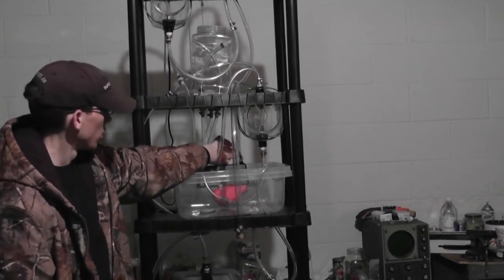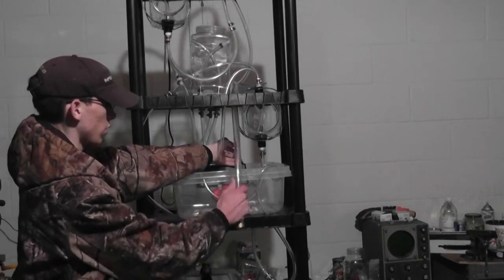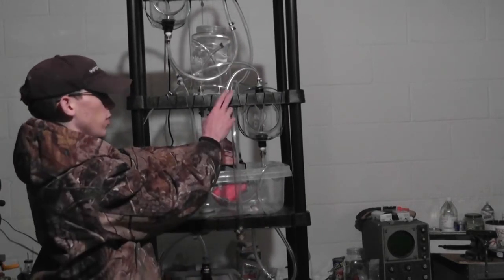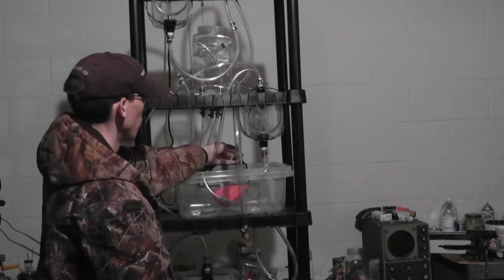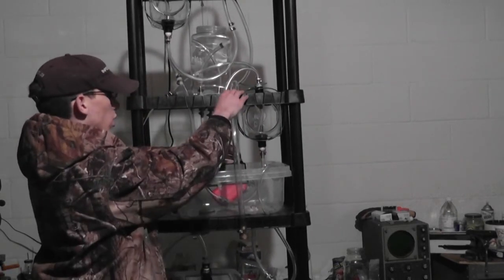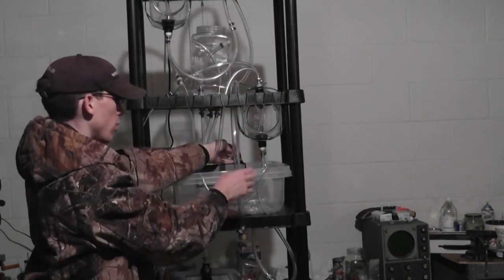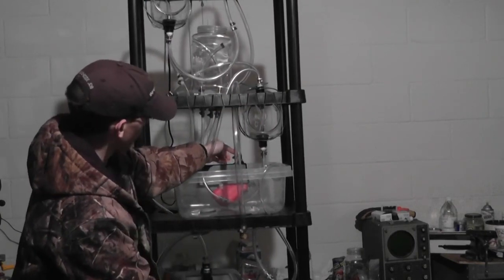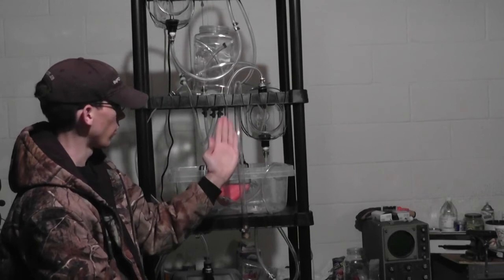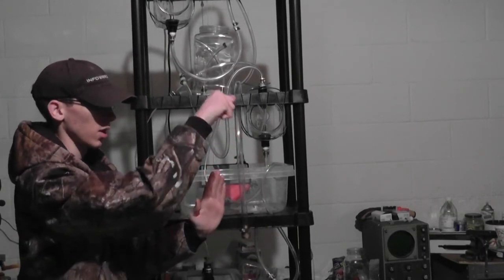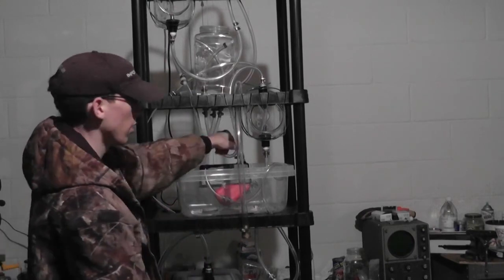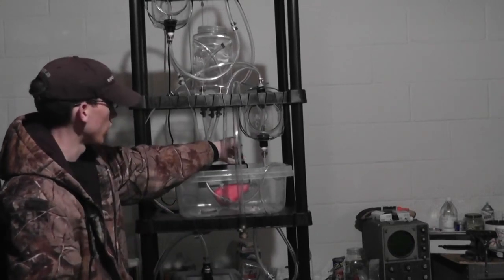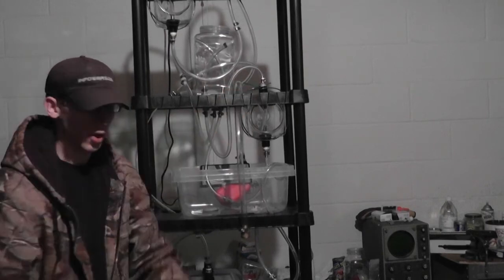Because what would happen is if you had this tube running underneath the shelf, just running directly to this fitting here, and it wouldn't sit on top of the shelf at all, the weight of the hose would just want to pull down on this thing, either kink it or even pop it right off the fitting. So that's why you want to have this thing lay over the top of the shelf.